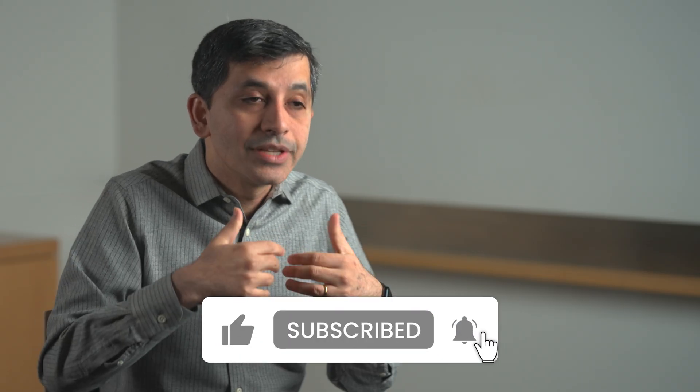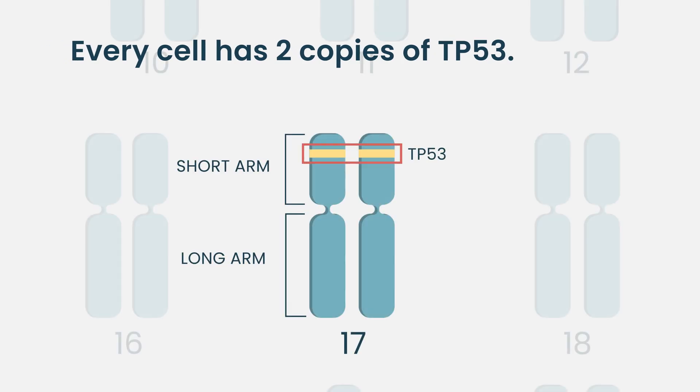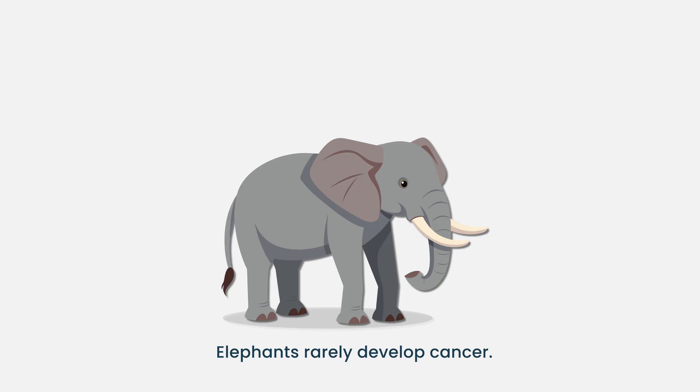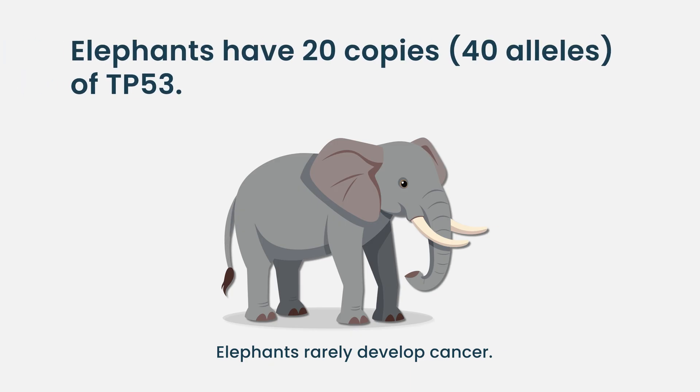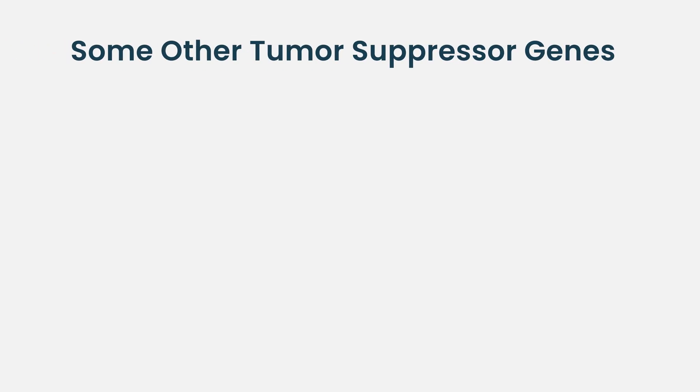We all need P53 to make sure cells do not become cancers. We have two copies of P53 that, for most of us, do the job. But if cancer cells are missing one or both copies, that's when cells become cancers. Interestingly, elephants do not develop cancer as frequently as humans — even though they have more cells. One speculated reason is that elephants have not just two but often 10, 20, or even 25 copies of P53.